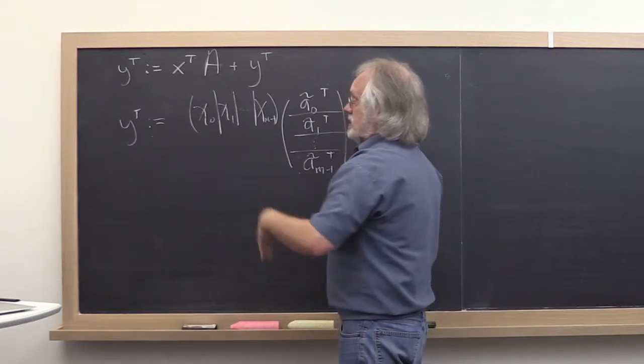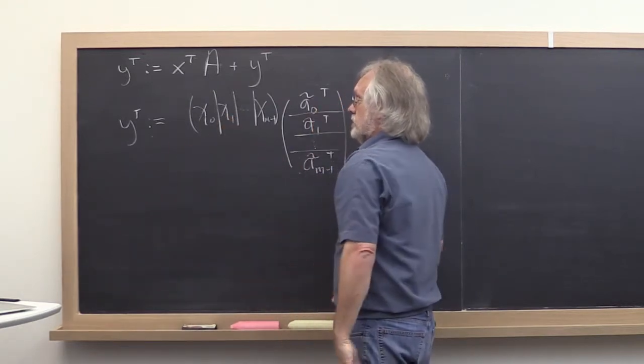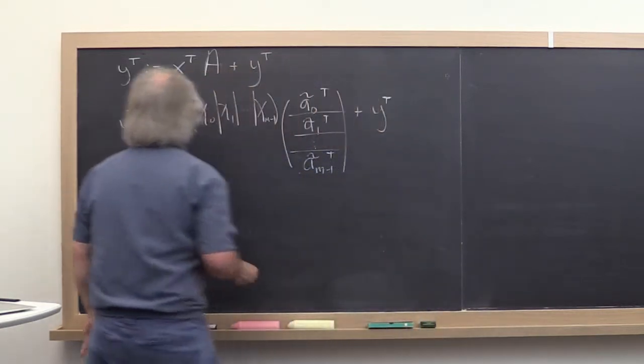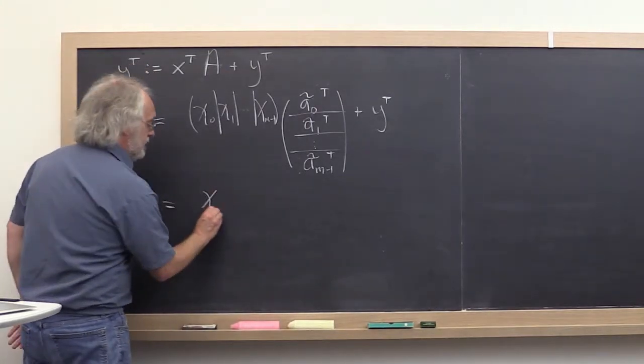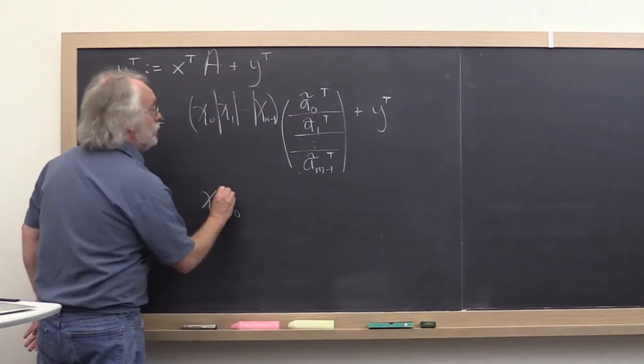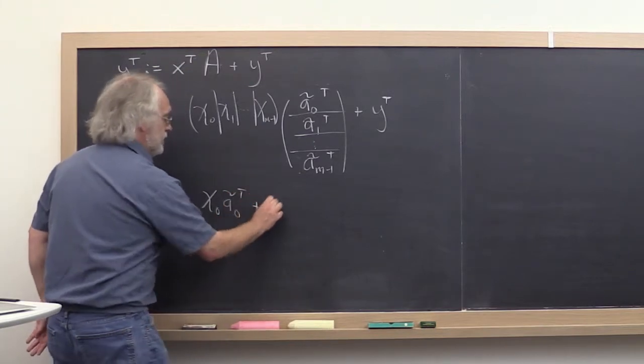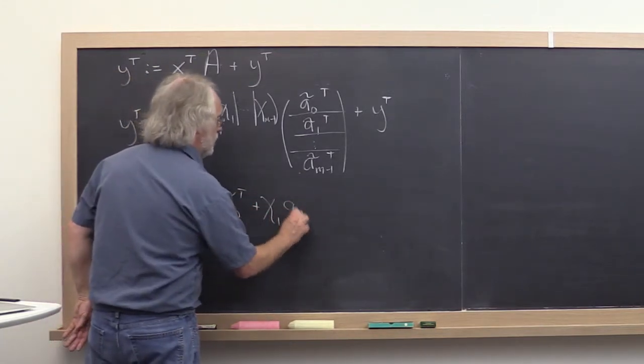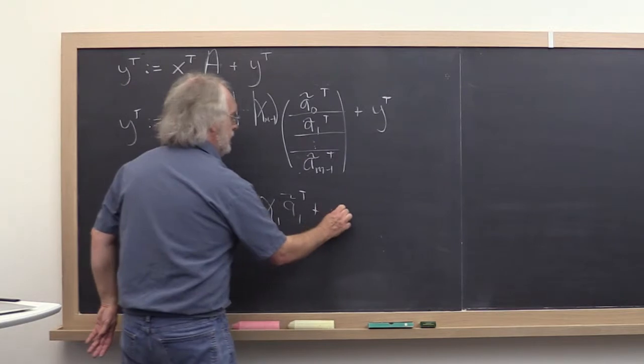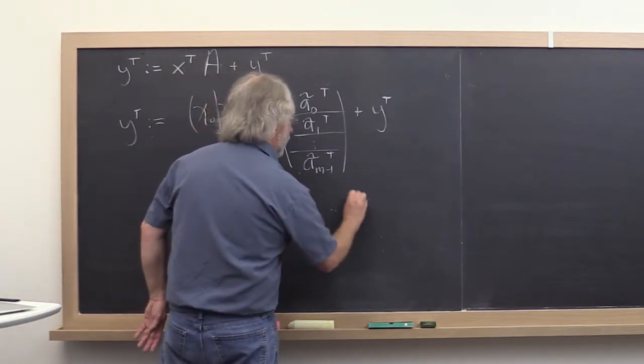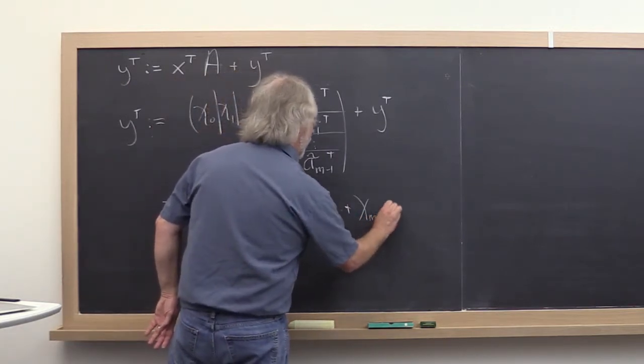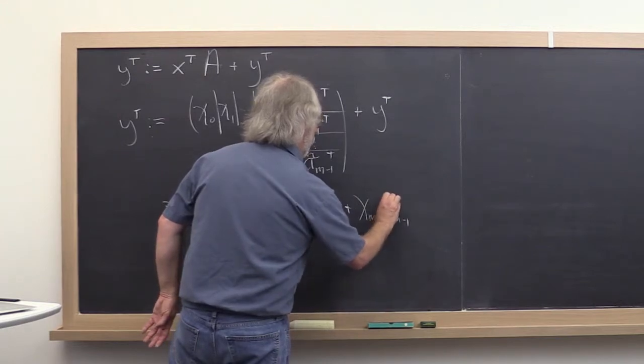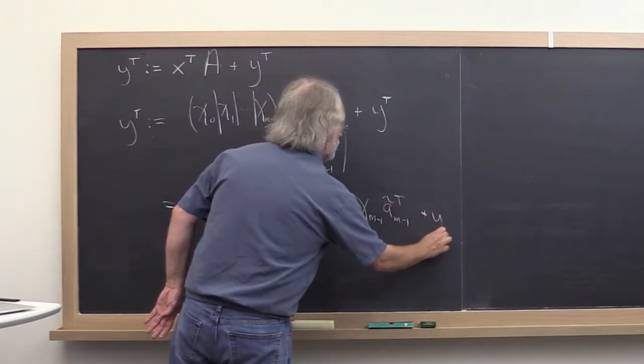And here you do the exact same thing except you do it with symbols. So this here becomes then chi zero times a zero tilde transpose plus chi one times a one tilde transpose and so forth. Add it to y transpose.